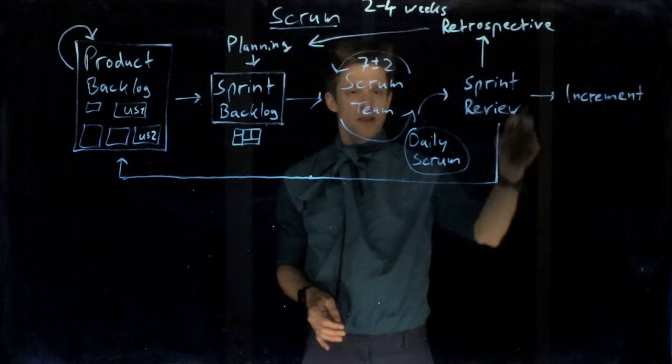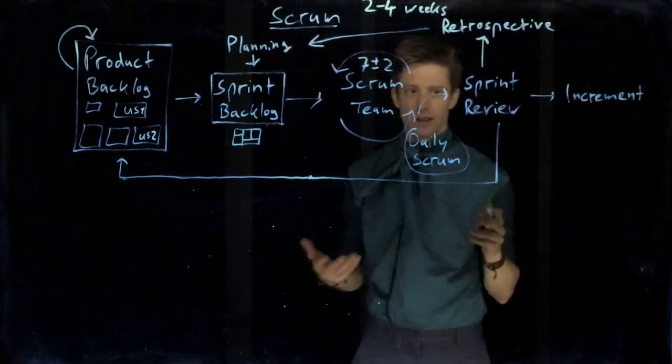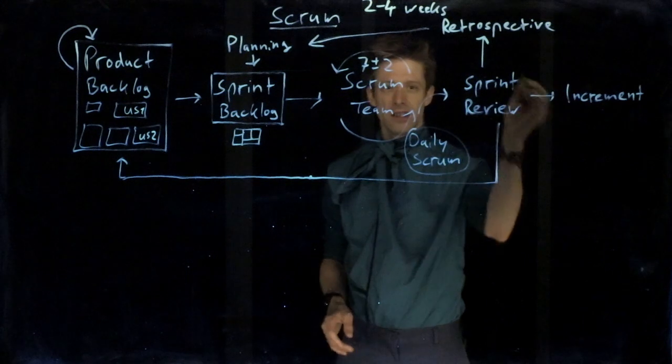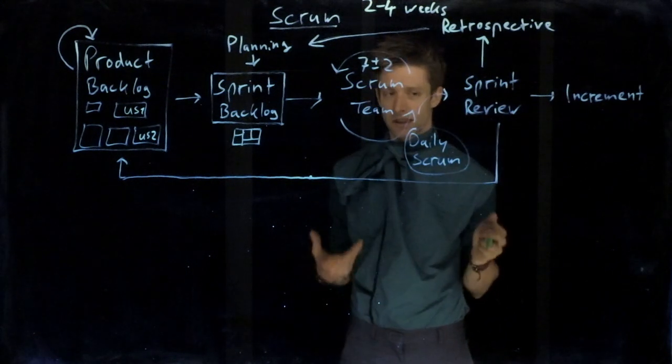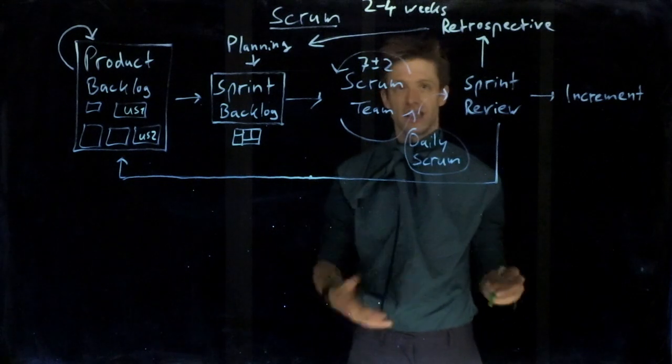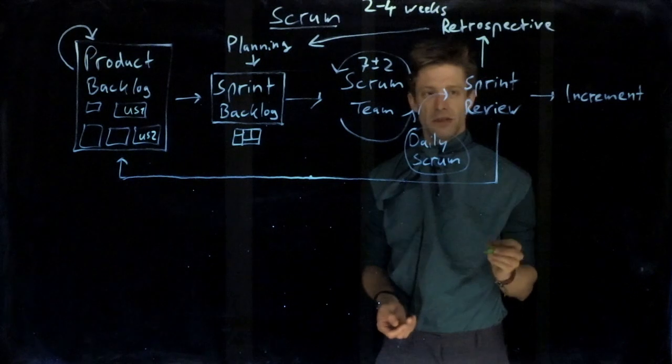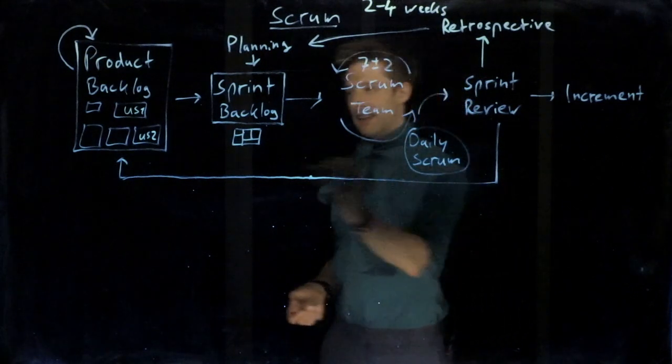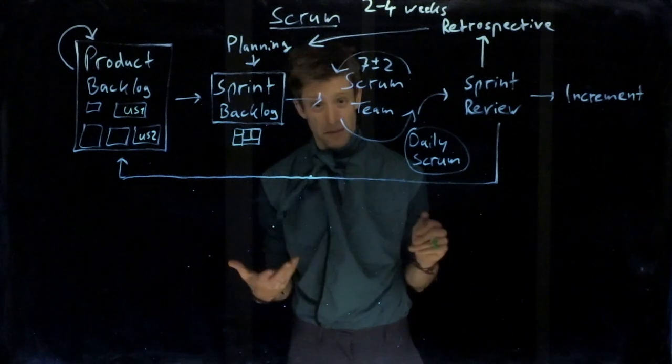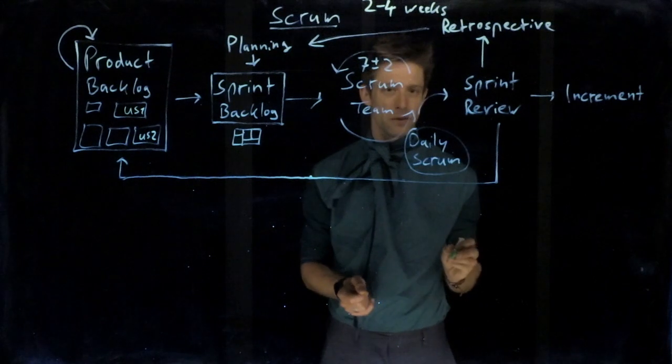Then you have the sprint review. Whenever you're done with the sprint, you have some increment, you have some deliverable, and that is being reviewed with the customer. You essentially demonstrate what you have produced in the sprint, and it should be something that gives functionality that can be run. Then that is being reviewed, and that usually can lead to new changes in the product backlog. You might realize that something was wrong before, or that you need something else that you didn't realize before. That's something you do in the sprint review.